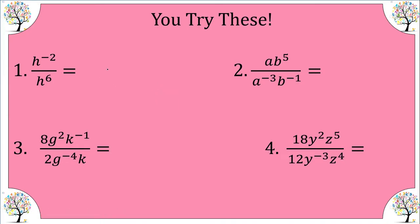We're going to apply the quotient rule by subtracting. I have h, with negative two minus six, which gives me negative eight. This gives me one over h to the positive eight.